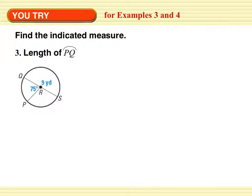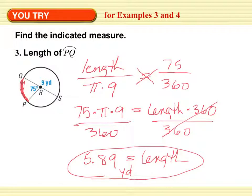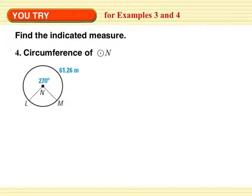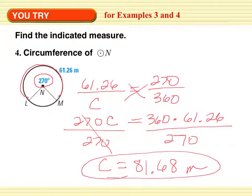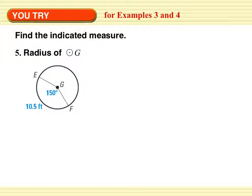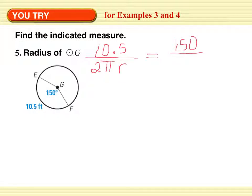You try — page one, push pause please. Another one: find the circumference, given the arc length and the same central angle — push pause. Find the indicated measure — we're trying to find the radius, so use arc length over 2 pi R equals measurement of arc over 360. Push pause and try on your own.